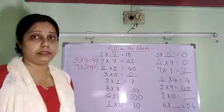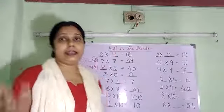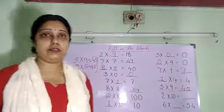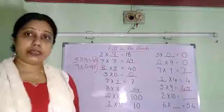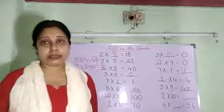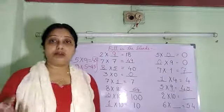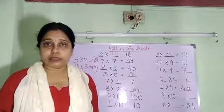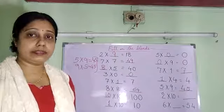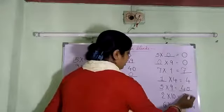Next: 2 10s are how much? Very easy. You read the table: 2 1s are 2, 2 2s are 4, 2 3s are 6, 2 4s are 8, 2 5s are 10, 2 6s are 12, 2 7s are 14, 2 8s are 16, 2 9s are 18, 2 10s are — yes, the answer will be 20.